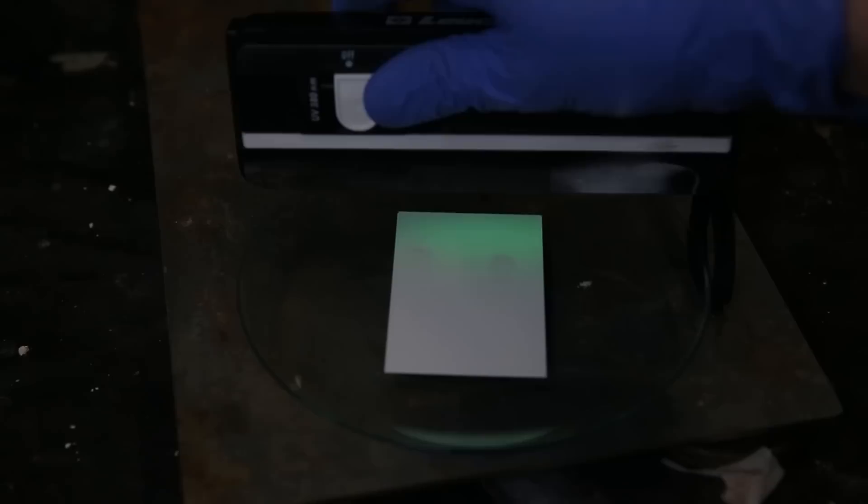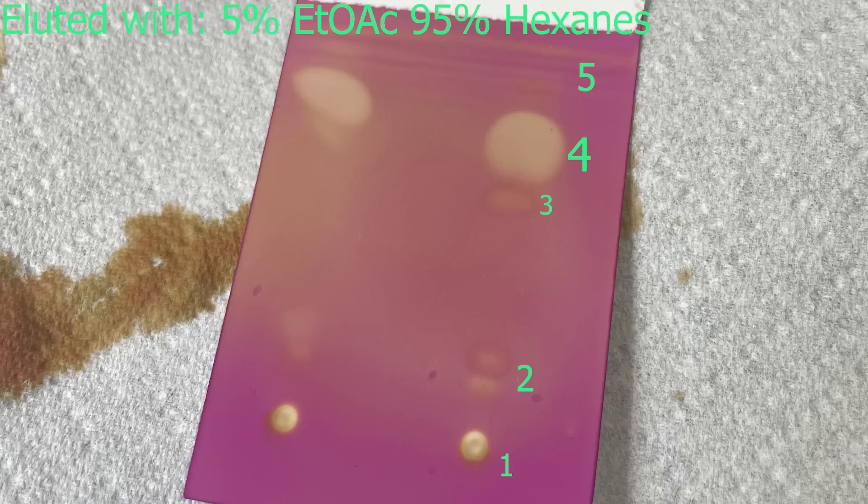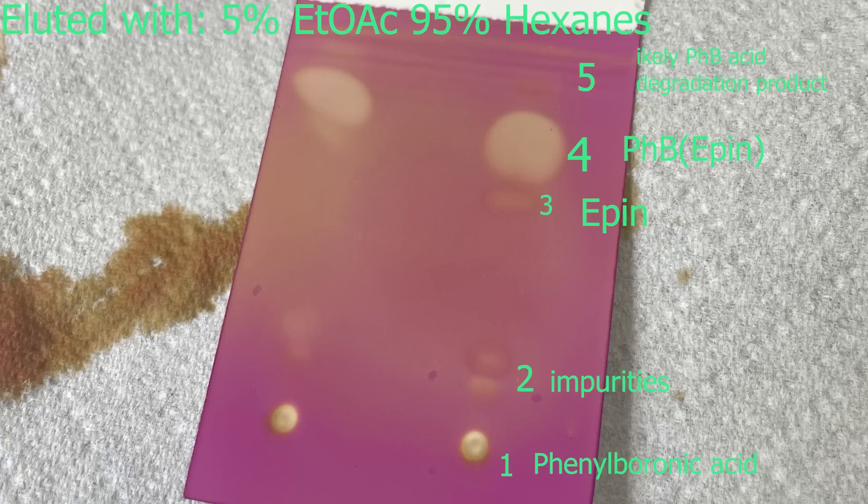I then stain the plate with a potassium permanganate solution and heat the plate with a heat gun to develop the spots. On the plate, we can see at least 5 or 6 compounds are present. On the bottom, we have phenylboronic acid, which doesn't move on the TLC plate. Then above that, we can see 2 small spots that are likely some impurities. Since phenylboronic acid is not stable on silica gel, it degrades and likely creates multiple different spots. The next spot we are seeing is epin, which is very faint. The spot after that should be the phenyl B-epin, which is also the largest compound present.